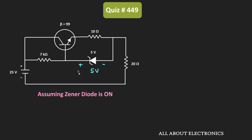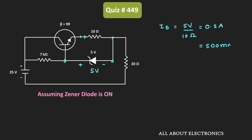If the Zener diode is in the ON condition, the voltage drop across it will be equal to 5V. Since the voltage VBE is negligible, this 5V will also appear across the 10 ohm resistor. So the voltage drop across the 10 ohm resistor is equal to 5V. The current through the 10 ohm resistor equals the emitter current, so IE = 5V / 10Ω = 0.5A, or 500mA.